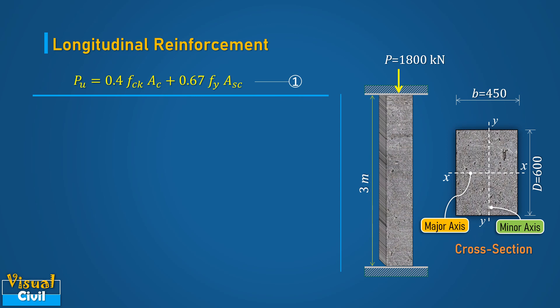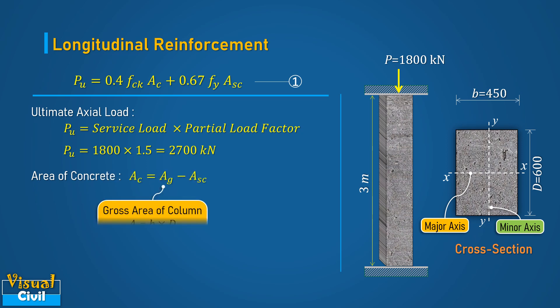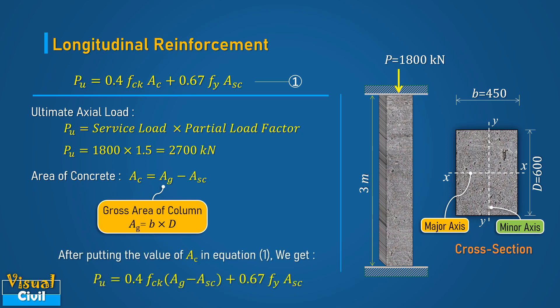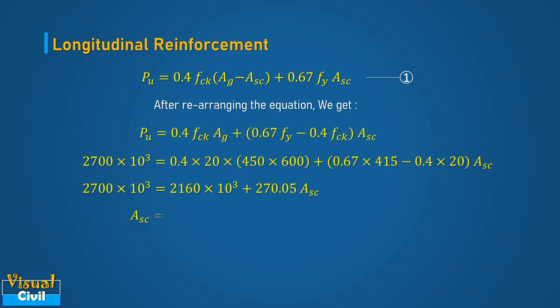The ultimate axial load PU is calculated by multiplying service load P with a partial load factor of 1.5. Hence, PU equals 2700 kN. Area of concrete AC is calculated by deducting the area of longitudinal reinforcement ASC from the total gross cross-sectional area AG. Substituting AC in the equation and rearranging, the required longitudinal reinforcement ASC equals 1999.63 mm².